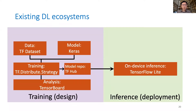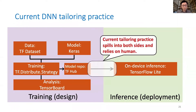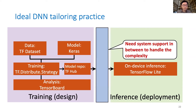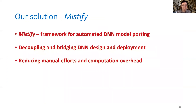However, if we look at the existing deep learning ecosystem — here we use TensorFlow as an example — current model tailoring relies on human effort and spills into both sides. Namely, either the model designers have to cover all possible deployment targets, or the model users need to understand, implement, and configure the tailoring algorithms. Apparently both are not ideal. Instead, we want an intermediate system to decouple the two sides and handle the tailoring complexity in between. And this leads to our solution, Mystify, an automated deep neural network model porting system.